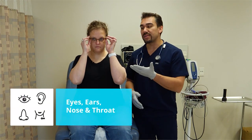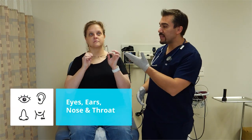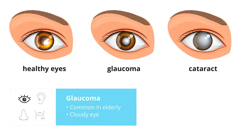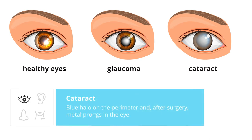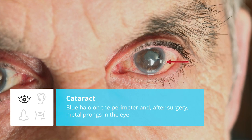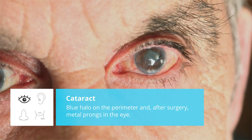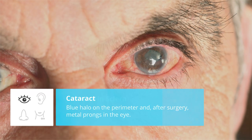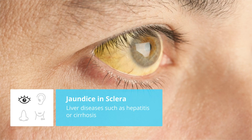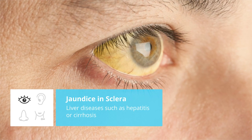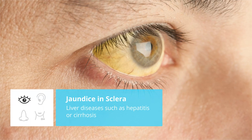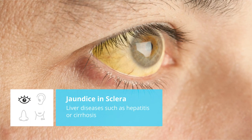For the eyes, ears, nose, and throat — the biggest thing with the eyes that you're probably going to see, especially with our elderly population, is glaucoma: you're going to see a cloudy eye. For cataracts, you'll see a blue halo on the perimeter of the eye. If the patient did have cataract surgery, it's going to look like metal prongs inside the eye. You might also see liver disease patients — they're going to have jaundice in the sclera, right on the whitening of the eye and even under the bottom of the eyelid, for cirrhosis as well as hepatitis patients.